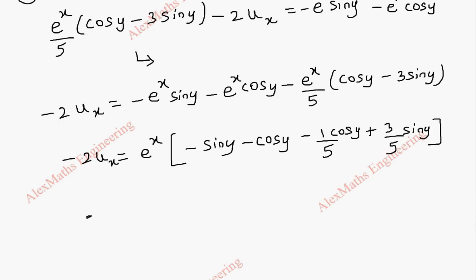Now minus 2ux becomes e^x times an expression. We need to take the LCM, which is 5.